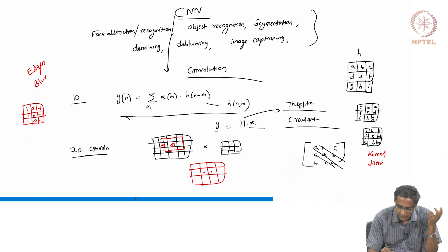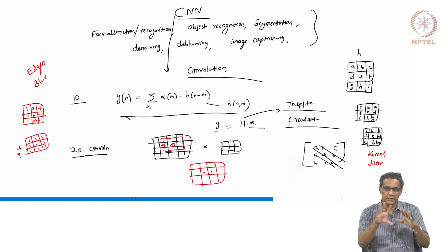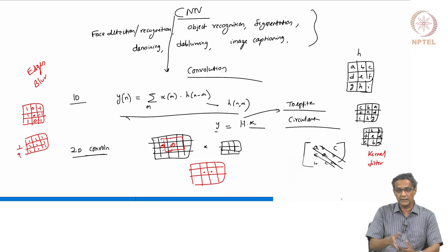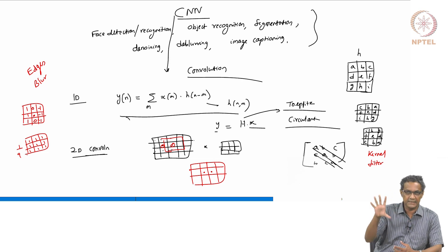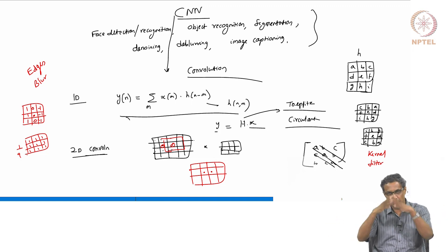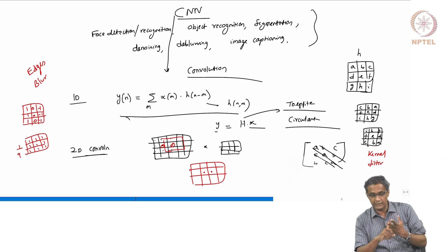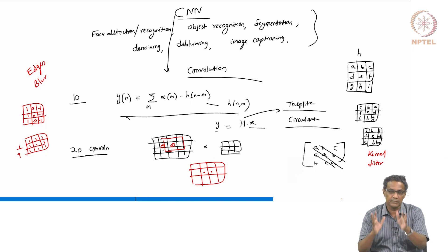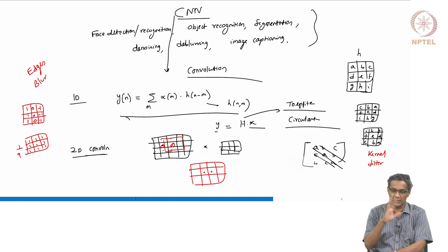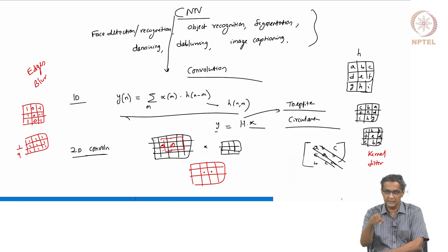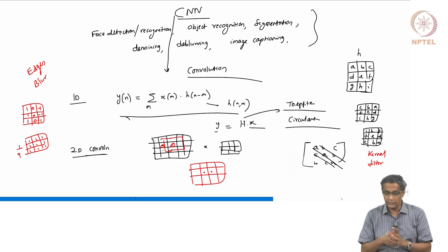If you want to do blurring with a 3×3 filter, put all 1s inside and multiply by 1/9 outside. If it is 5×5, multiply by 1/25 — that is how you do averaging. You can have a different blur using a Gaussian kernel instead of a uniform kernel. All weights being the same is uniform; sometimes you give more importance to the middle, which gives a Gaussian filter. You can have all kinds of filters, and these are all handcrafted. But what we really want is a network that can actually figure out what these filters ought to be — we do not want to sit and decide what the filter should be.